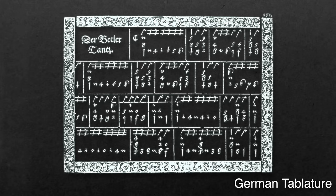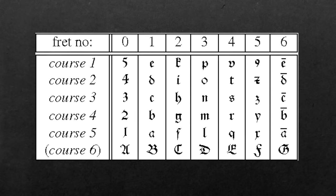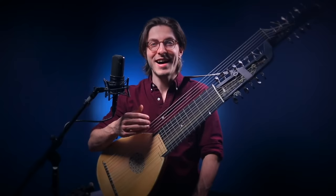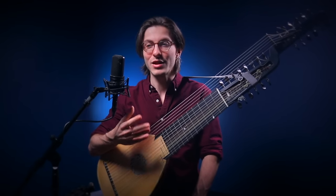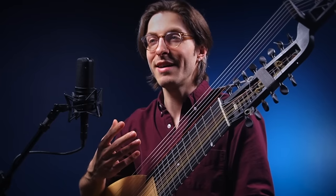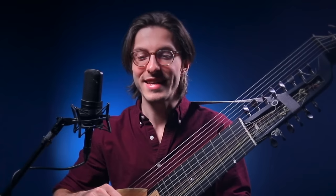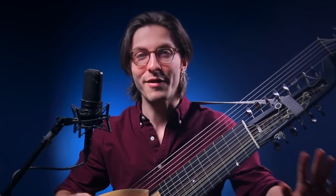The third type of tablature is known as German tablature. This is the most different style of notation. In this one, rather than having lines representing strings and placing notes on those strings, we get an individual symbol for each location on the fretboard. I have many colleagues who can play from German tablature, so I think it looks more intimidating than it is. This isn't something I've spent much time on yet, so I'm going to hold the discussion about German tab for a future video.